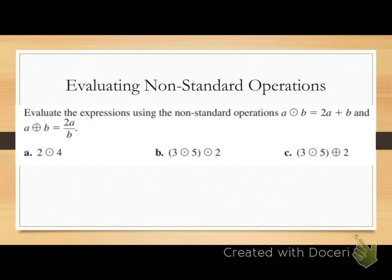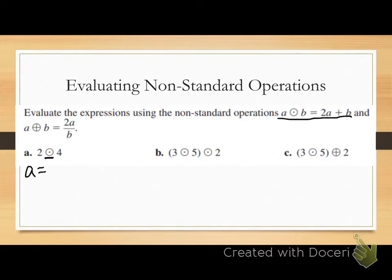Letter a wants me to evaluate 2 circle-dot 4. The first thing I need to do is identify which operation I'm using. Since it has the circle-dot, I know I'm going to be using the expression that has the circle-dot in it. So I'm using 2a plus b. The next thing I need to do is determine which number is my a value and which number is my b value. 2 is in the same position as a, so my a value is 2. 4 is in the same position as b, so my b value is 4.